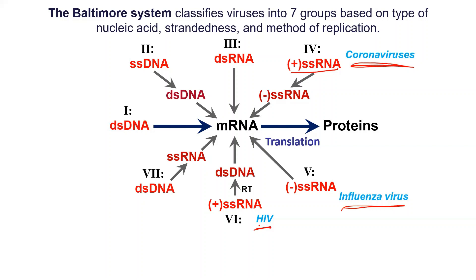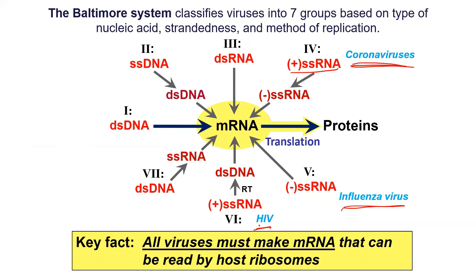All viruses basically have to make messenger RNA that can be read by ribosomes, because ribosomes make proteins — that's a key point. There are many different strategies to do it. Some people ask why there are so many different types. Well, the answer is because it's working for them — sometimes that's just the answer with biology. Why is there so much variety? Because if it works, you just stick with it. Many of these viruses are very successful and they don't need to change.